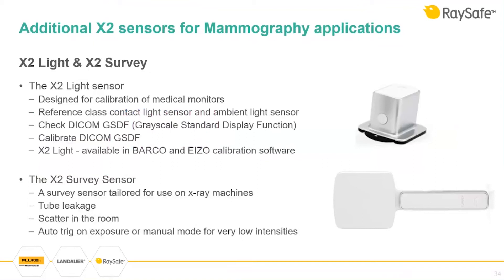Additional X2 sensors for mammography applications: the X2 Light sensor is designed for calibration of medical monitors — it's a reference-class contact light sensor with the capability to measure ambient light. You can use it to check or calibrate the grayscale standard display function, and it is available as a choice in Barco and iQS calibration software. The X2 Survey sensor can be used for tube leakage and checking scatter in the room, and is a good tool to teach staff working in the mammography room about radiation differences when standing behind the protection screen versus being in the room.